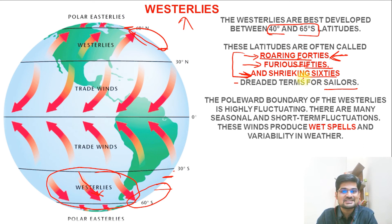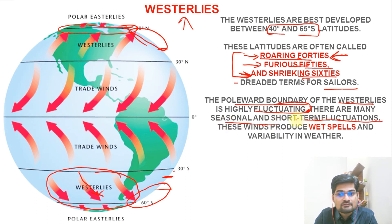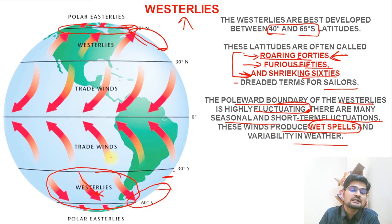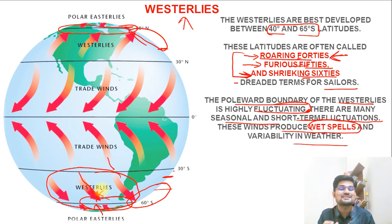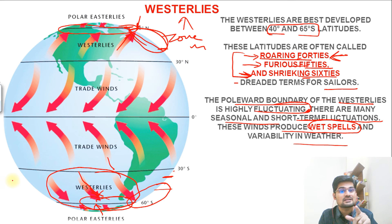The poleward boundary of the westerlies — the polar front — is highly fluctuating, with many seasonal and short-term fluctuations. These winds produce wet spells and variability in weather because easterlies and westerlies meet at this front, creating turbulence. The temperate belt is also called the zone of mixing — westerlies being warm and easterlies being cold create this kind of weather fluctuation and turbulence at that particular front.